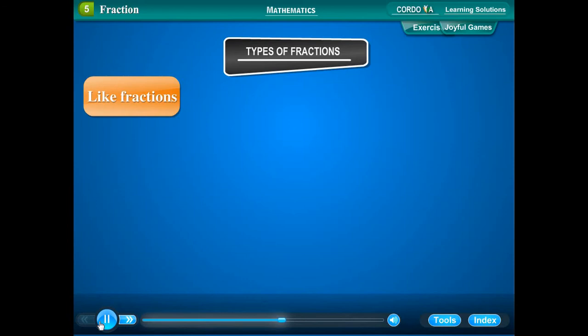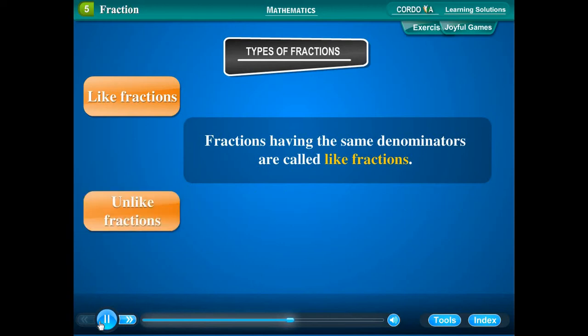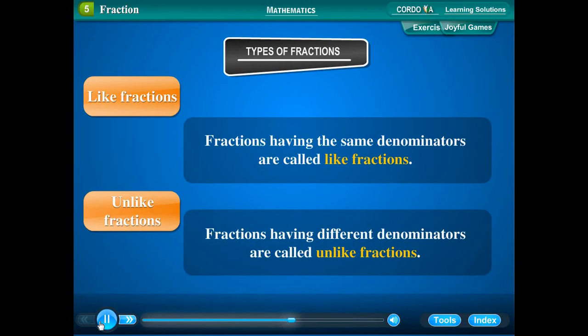Types of fractions. Like fractions: Fractions having the same denominators are called like fractions. For example, 1 upon 5, 3 upon 5, and 4 upon 5 are like fractions. Unlike fractions: Fractions having different denominators are called unlike fractions. For example, 2 upon 3, 3 upon 4, and 1 upon 5 are unlike fractions.